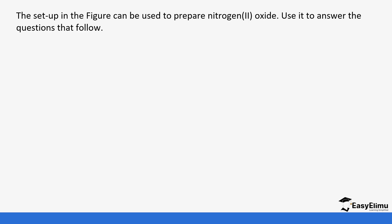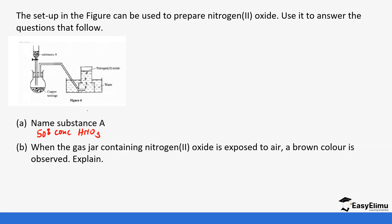Let's look at a few questions to help us understand what you have been learning. The setup in the figure can be used to prepare nitrogen (II) oxide. Use it to answer the questions that follow. We have substance A reacting with copper turnings to form nitrogen (II) oxide. Substance A we are going to call it 50 percent concentrated nitric acid. Part (b): When the gas jar containing nitrogen (II) oxide is exposed to air, a brown color is observed. Explain.